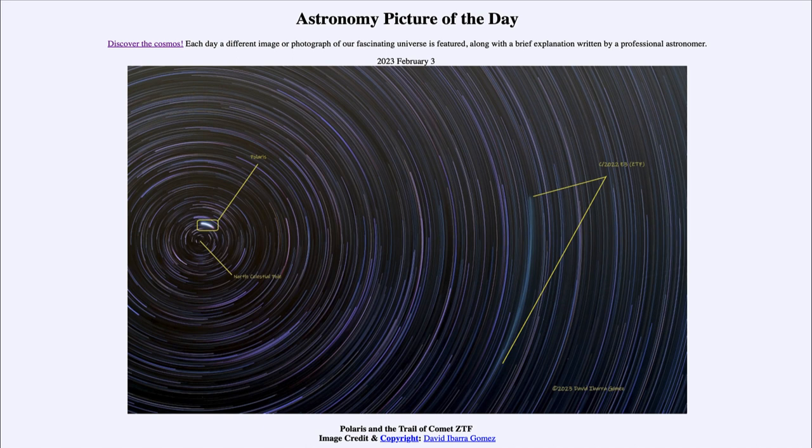It had its closest approach to the sun in mid-January and to earth on the first of February, and now is heading back out into the outer solar system. So it became bright enough to be seen with the naked eye but still needed a relatively dark site to be able to see it.